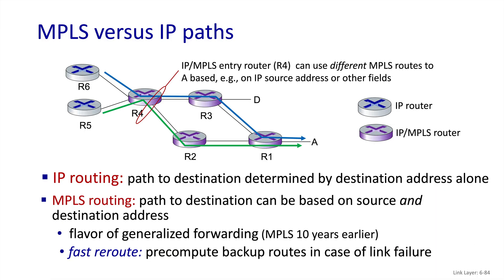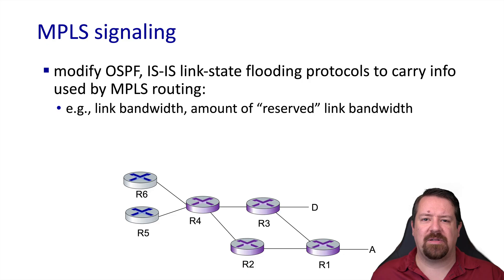While we're talking about it later in the course, MPLS predates the SDN generalized forwarding we discussed in previous videos by about a decade, but it shares a number of goals in common with generalized forwarding, or software-defined networks. MPLS requires some signaling to set up the pre-computed paths, and it does this over modified link state routing protocols. In MPLS we have the concept of reserved bandwidth similar to virtual circuit networks, so it would be possible to prevent congestion from occurring within an MPLS network.